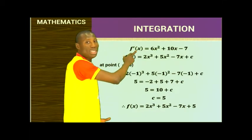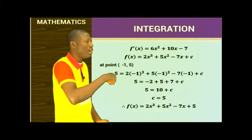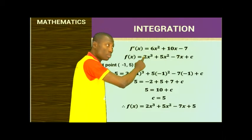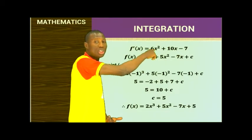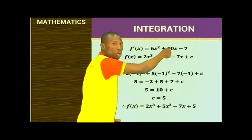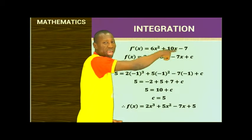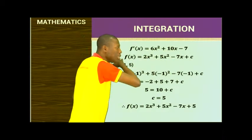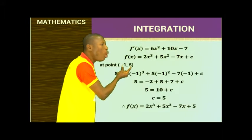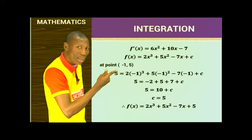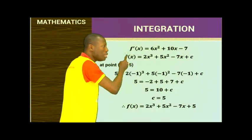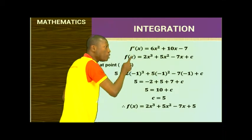To find the original function from the gradient of a particular function, we integrate. So I have the gradient as 6x squared plus 10x minus 7, and the integration of this function gives the original function. At the point (-1, 5), this coordinate means X and Y, so X equals -1 and Y equals 5.